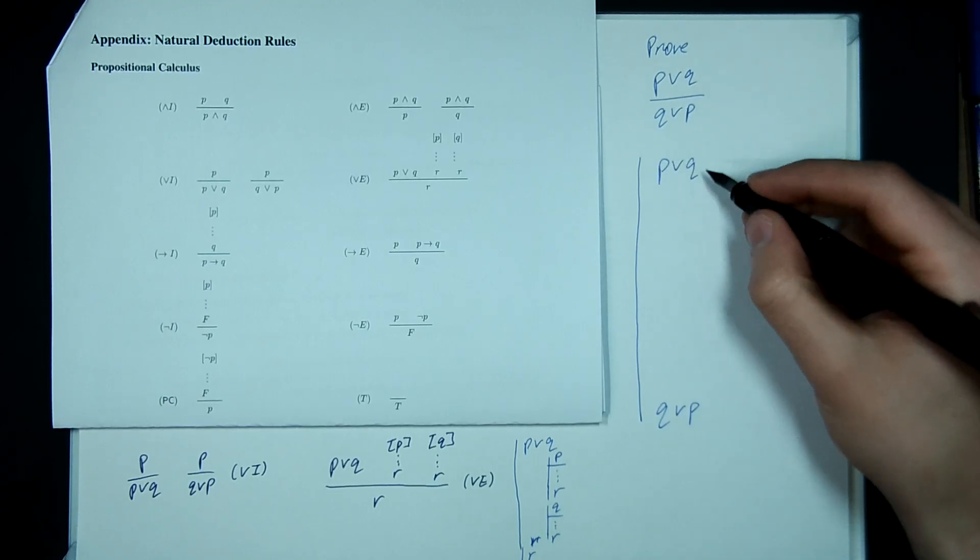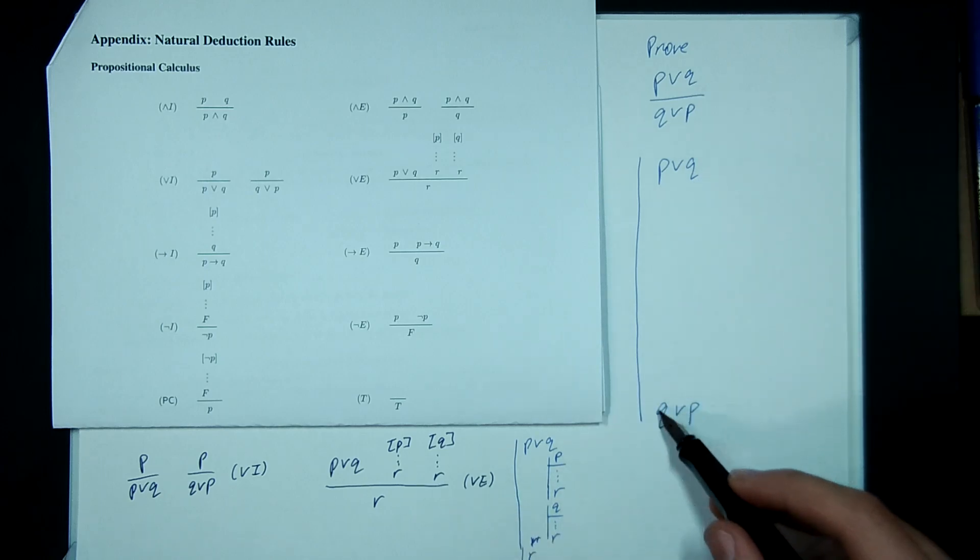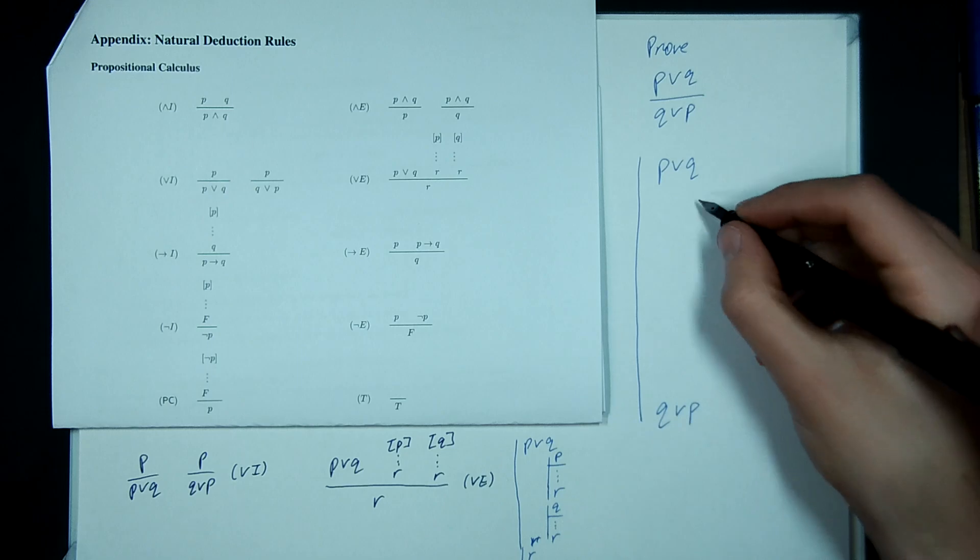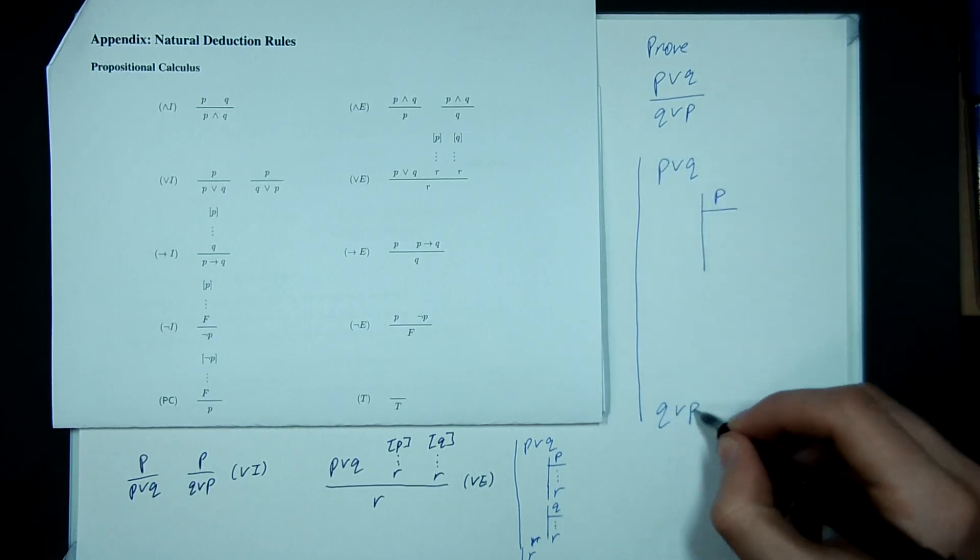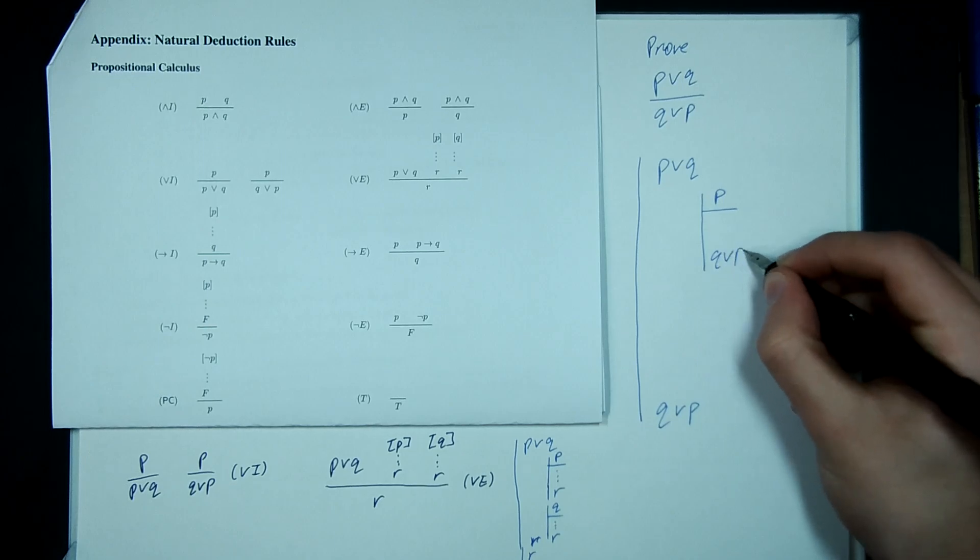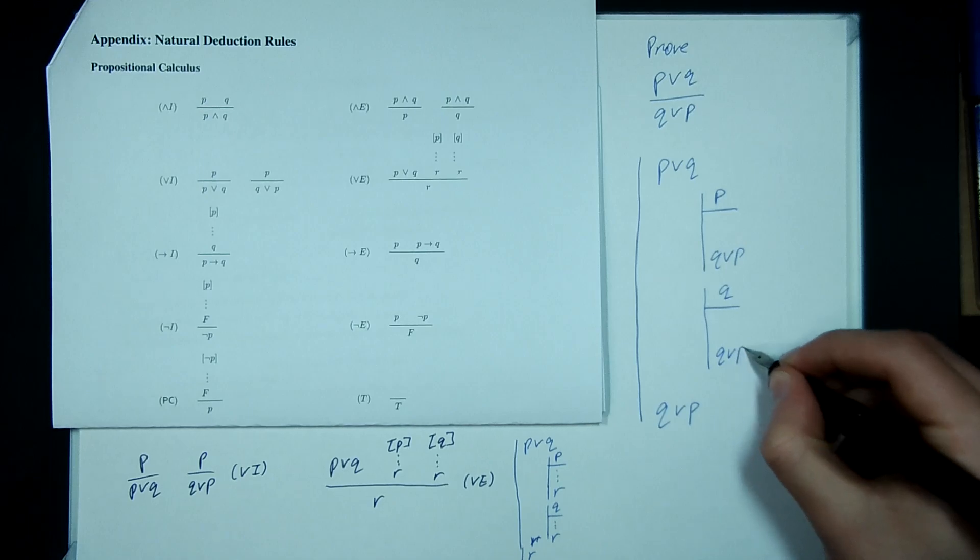Now I'm trying to prove something from an OR, which means I'm going to have to use OR elimination. Where my target here, this thing is my R. So I'm going to have to somehow, from P, derive my target Q or P. And separately, from Q, derive my target Q or P.